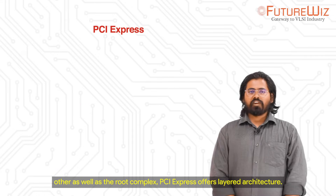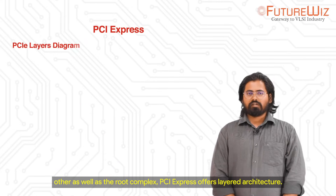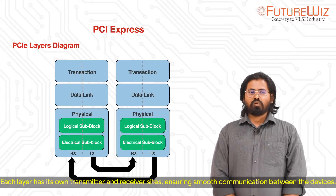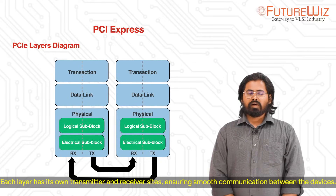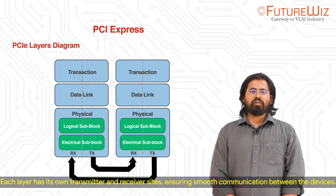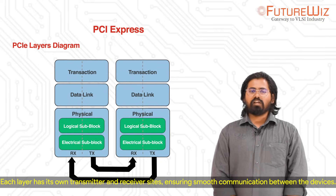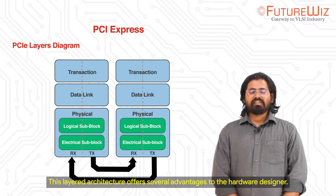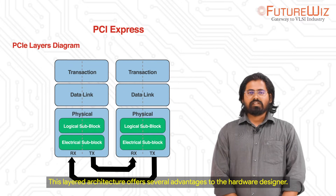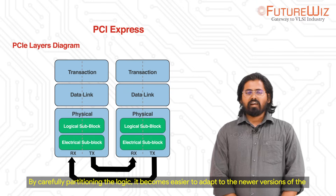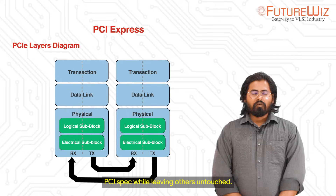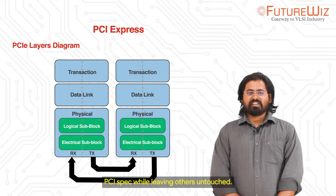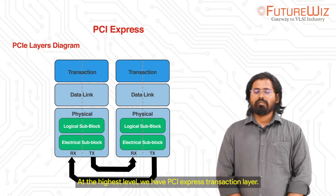PCI Express offers a layered architecture. Each layer has its own transmitter and receiver sides, ensuring smooth communication between devices. This layered architecture offers several advantages to the hardware designer. By carefully partitioning the logic, it becomes easier to adapt to newer versions of the PCI spec while leaving other layers undisturbed. At the highest level, we have the PCI Express transaction layer.